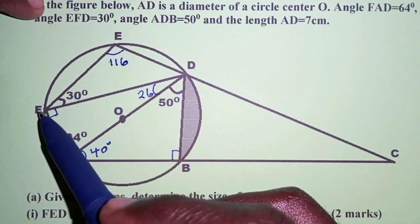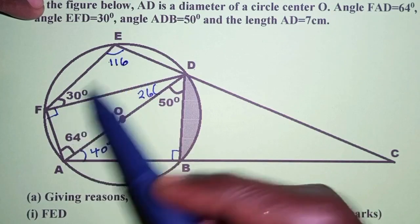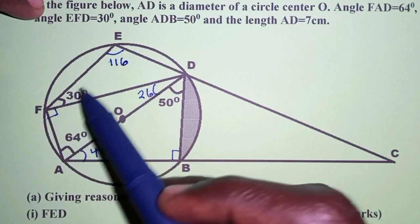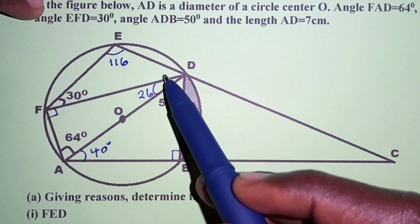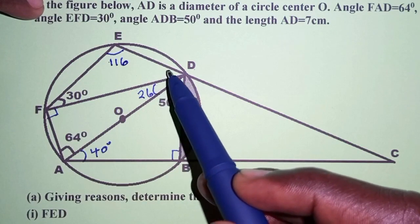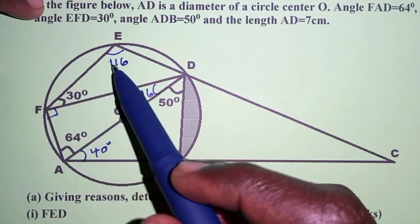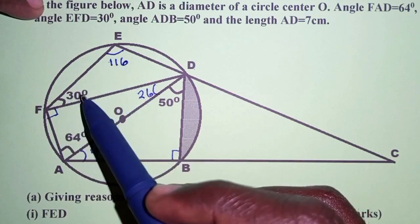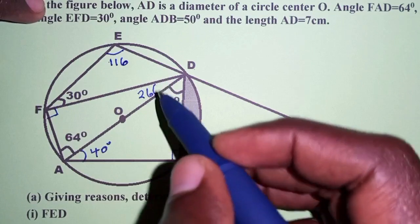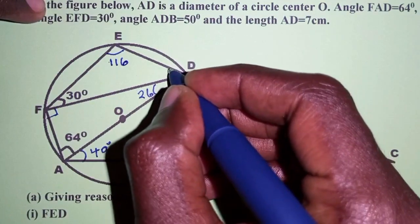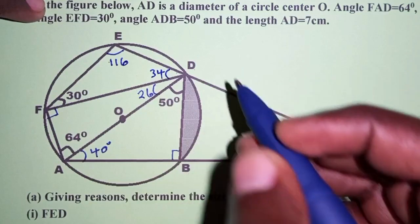Also considering triangle FDE: 30 plus 116 plus this angle should equal 180. So we take 180 minus 146, which gives us 34 degrees for that angle.